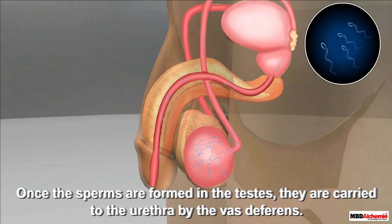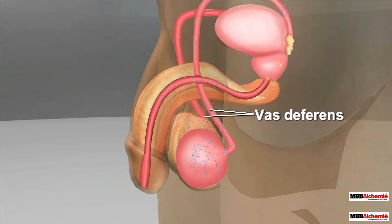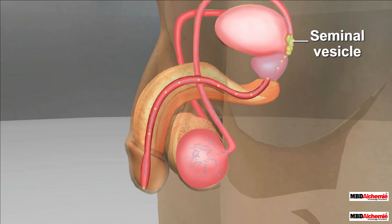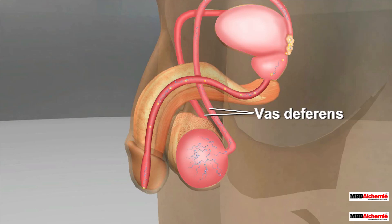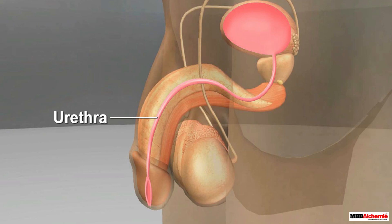The next organ is the vas deferens. It is a long tube present close to the testes. Once the sperms are formed in the testes, they are carried to the urethra by the vas deferens. In the vas deferens, several ducts from different glands like the prostate and the seminal vesicle open up, releasing their respective secretions, which mix with the sperms to help in their easy transport.